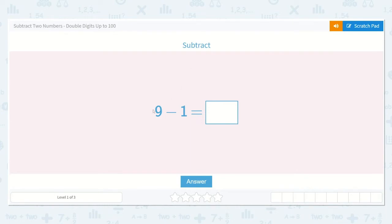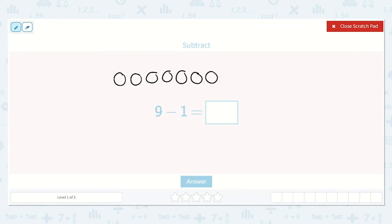It says subtract 9 minus 1. So we can draw 9 dots: 1, 2, 3, 4, 5, 6, 7, 8, 9. And we can subtract or take away one of them. How many do we have left? 1, 2, 3, 4, 5, 6, 7, 8. So 9 minus 1 is equal to 8.